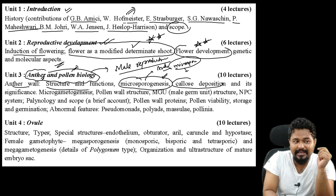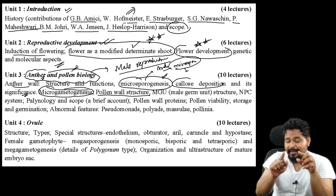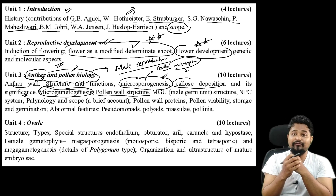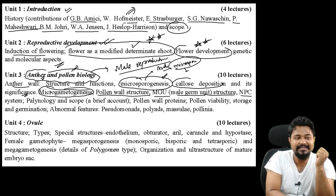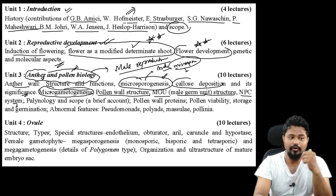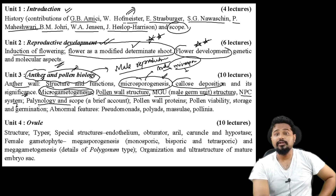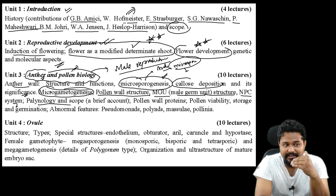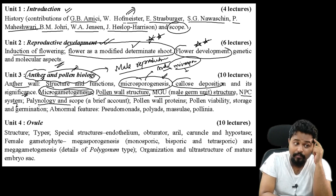Callose deposition and its significance, microgametogenesis, pollen wall structure - morphological and structural variations, male germ unit structure, NPC system (classification of pollen based on nuclear position, condition, and aperture), and palynology - the scope and study of pollen biology.